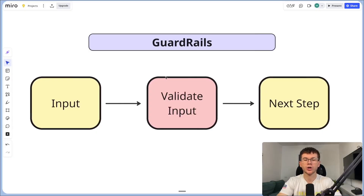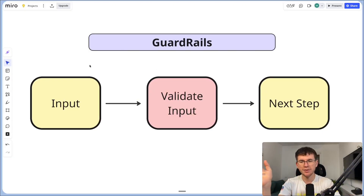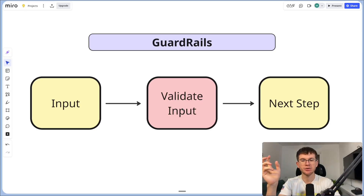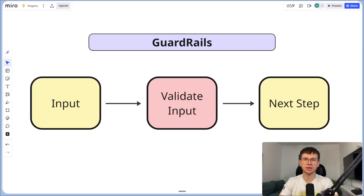Essentially what a guard rule is: it's a way for us to validate some sort of input. We have an input — which can be an email, a message, or some sort of form — and then the middle step, which is this new feature, is actually validating that input before going to the next steps.